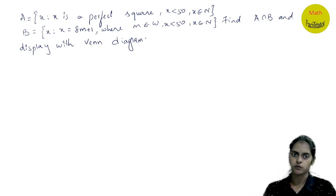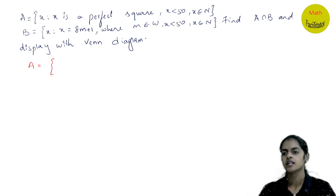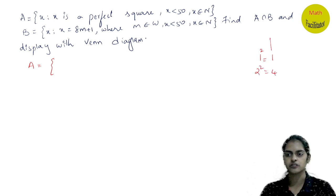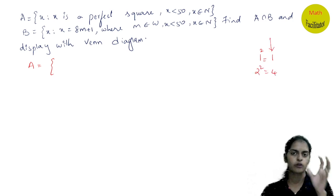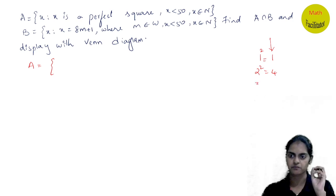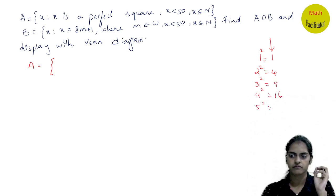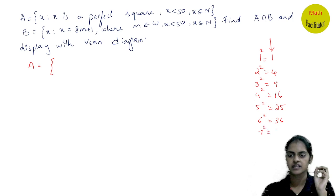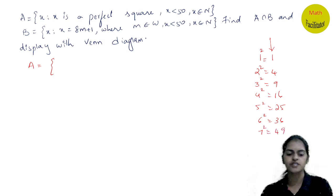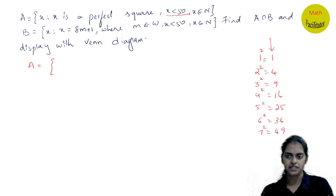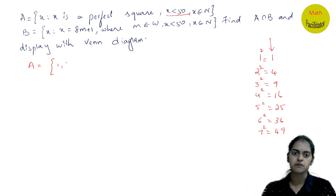Next question: A is defined in set builder form where x is a perfect square less than 50. Perfect square numbers: 1² = 1, 2² = 4, 3² = 9, 4² = 16, 5² = 25, 6² = 36, 7² = 49. 8² = 64 is not less than 50, so we stop at 49.